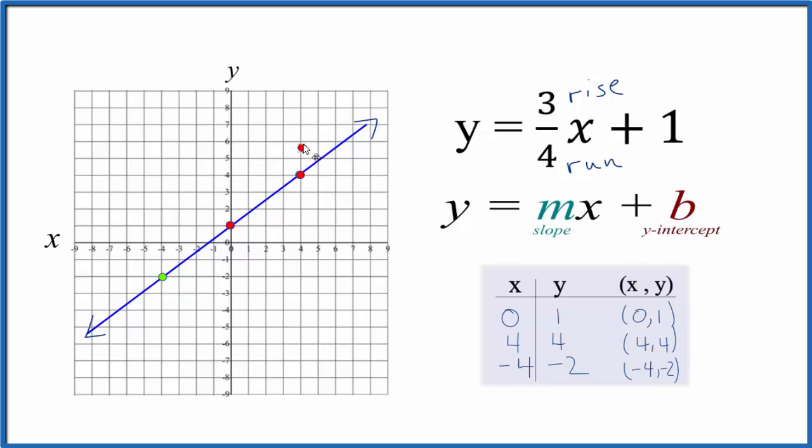Go to that point, rise one, two, three, and go for one, two, three, four, and we're on the line. So that shows that we did this correctly.